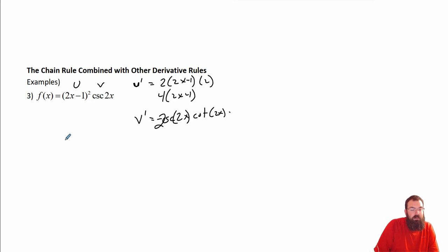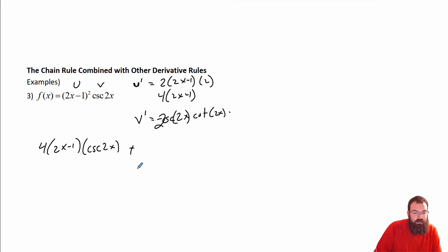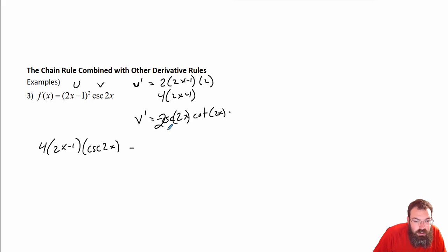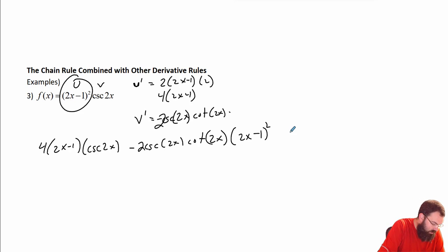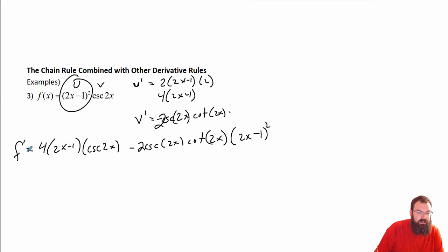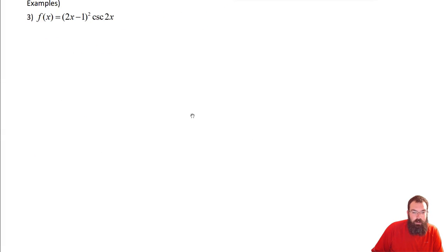Let's put it all together. We get u prime, which is 4 times (2x minus 1) times cosecant of 2x, and it's a product rule so that's a plus, but with the minus from v prime that becomes a minus — minus 2 times cosecant of 2x times cotangent of 2x, times u which is (2x minus 1) squared. I'm not going to clean that up. Make sure you have your notation showing it's f of x.